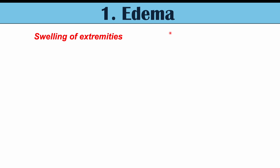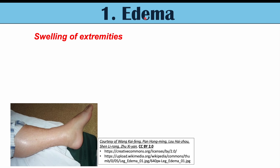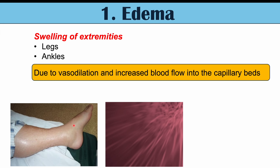The way amlodipine works can lead to particular side effects, and these include edema. Edema is an important side effect of amlodipine use — it is swelling of the extremities. Most often we see swelling of the legs, but we can also see swelling of the ankles, though the legs are the most likely to be edematous.